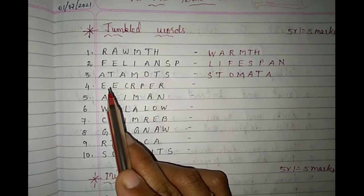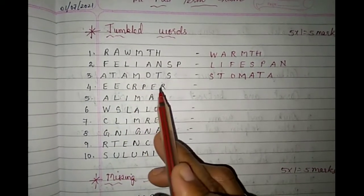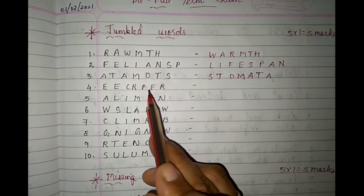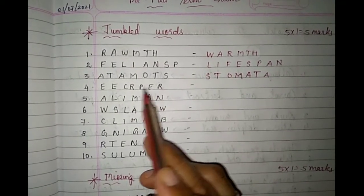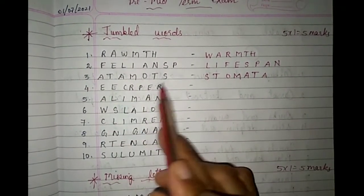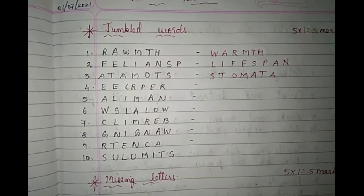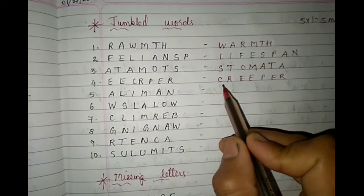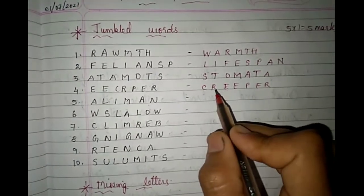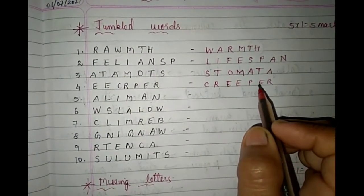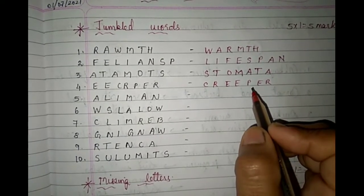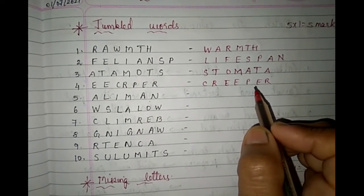Fourth one: E-E-C-R-P-E-R. This is quite easy. Look, P-E-R is already in sequence. Carefully: C-R-E-E-P-E-R. What does it become? Creeper. What is an example of a creeper? Watermelon and pumpkin.